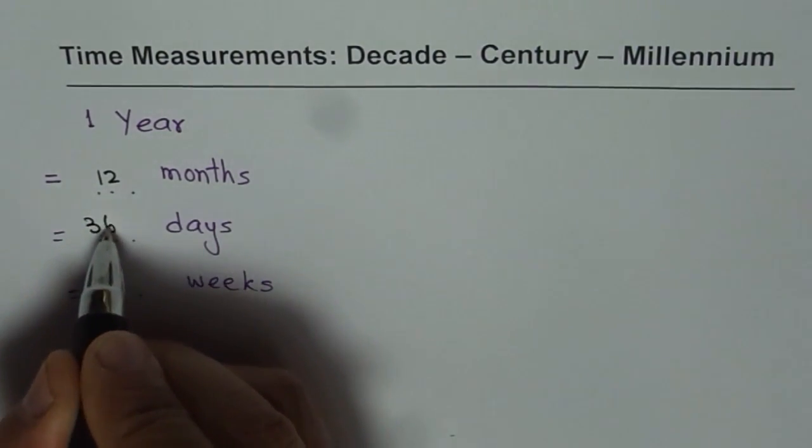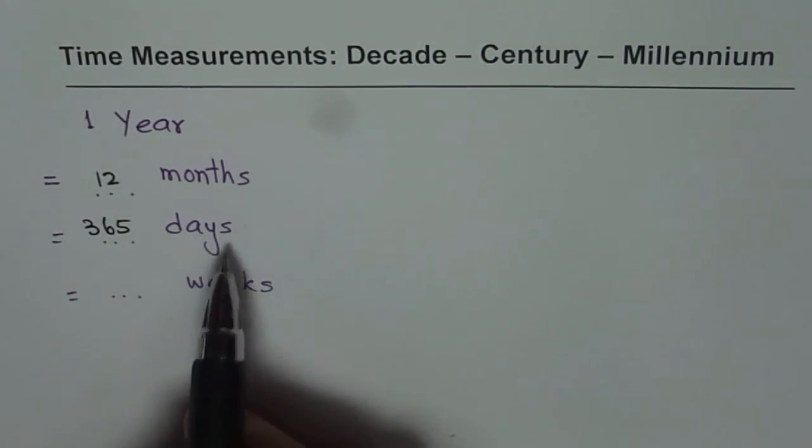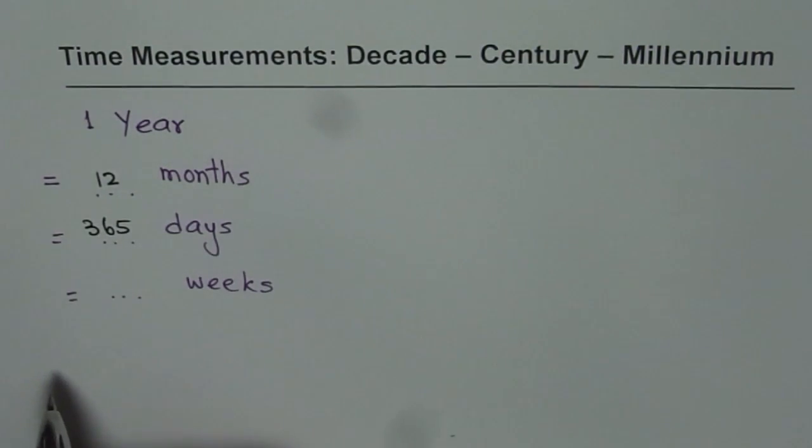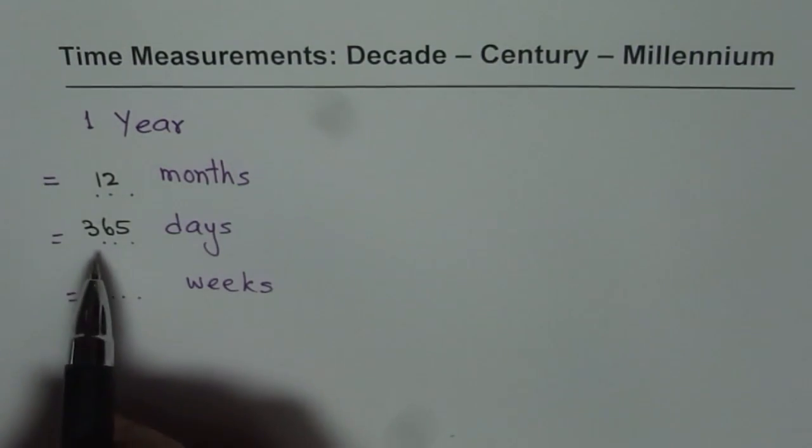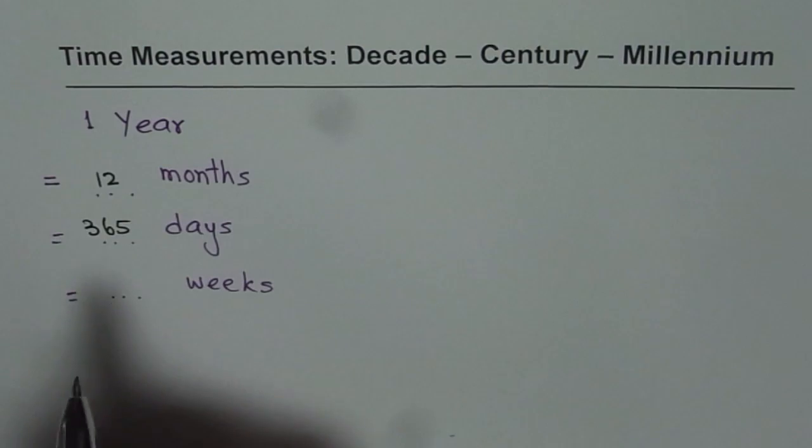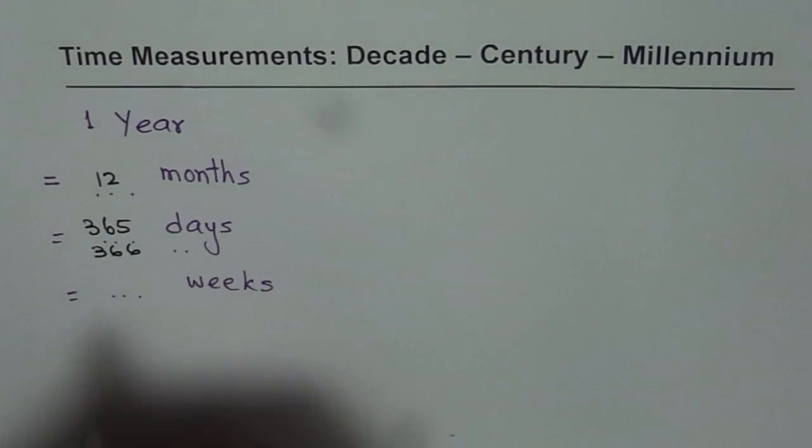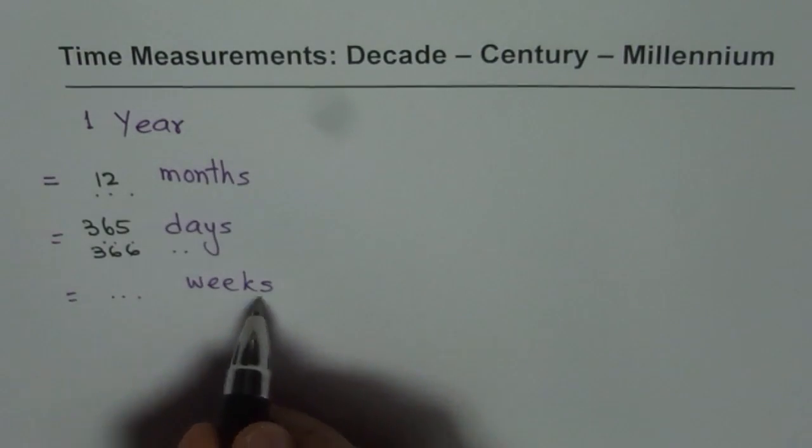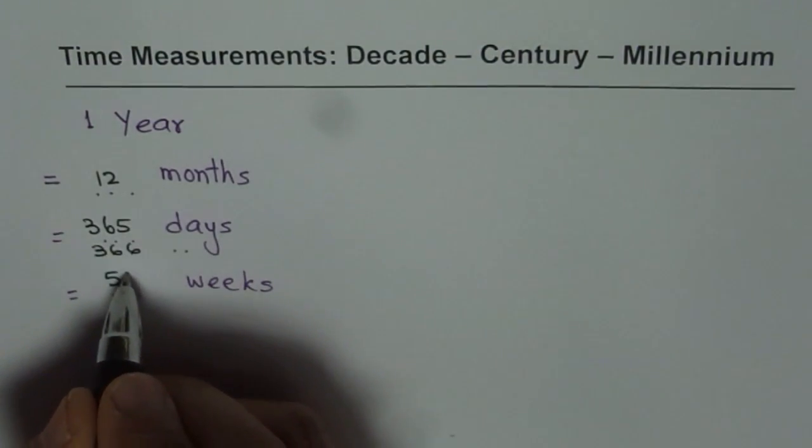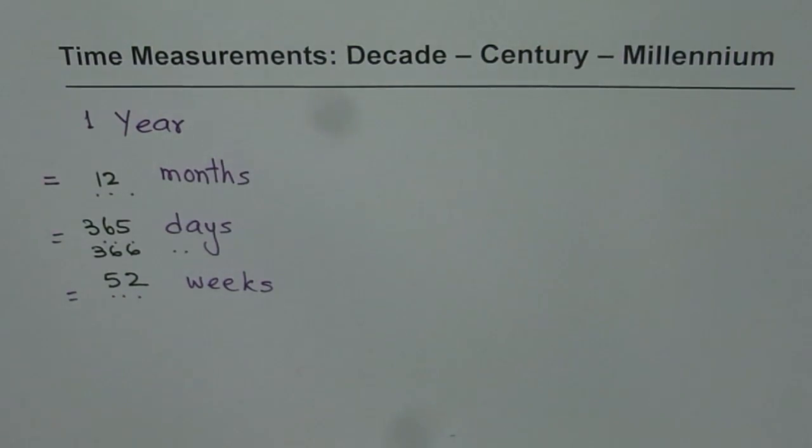365 days. In a leap year however, there are 366 days. But in general, we write 365. So let me write 366 also and that is for leap year. As far as weeks are concerned, there are 52 weeks in a year and you know there are 7 days in a week.